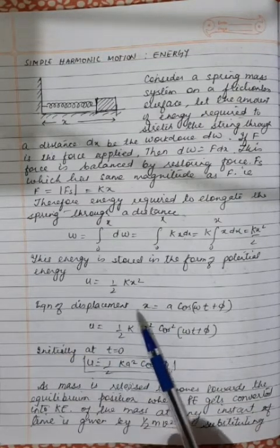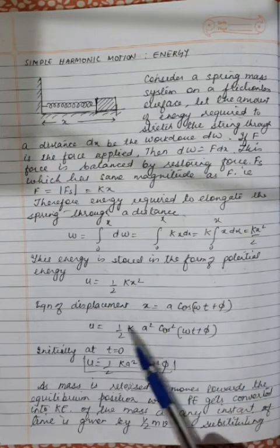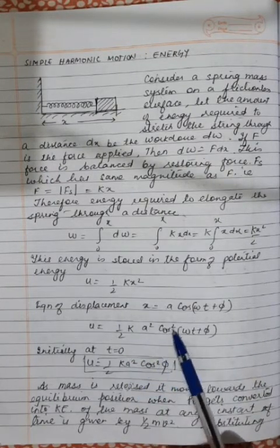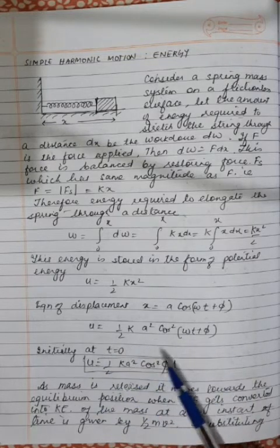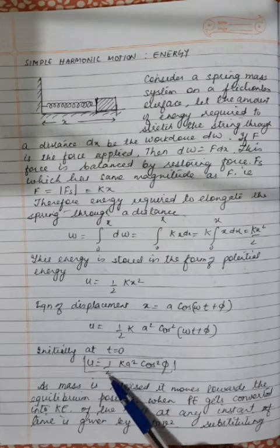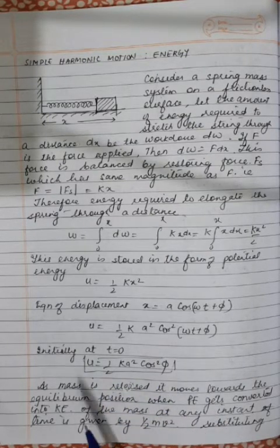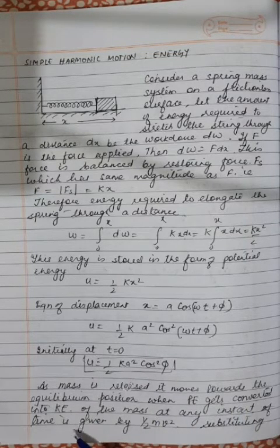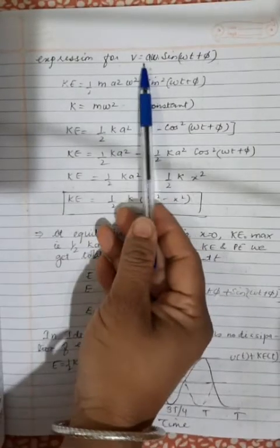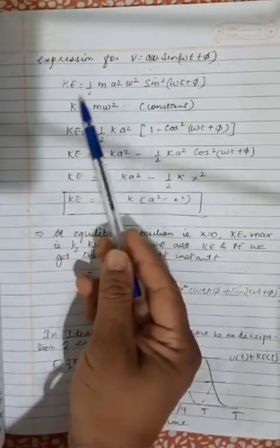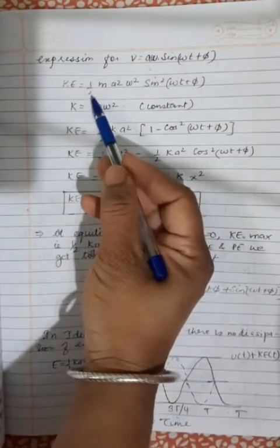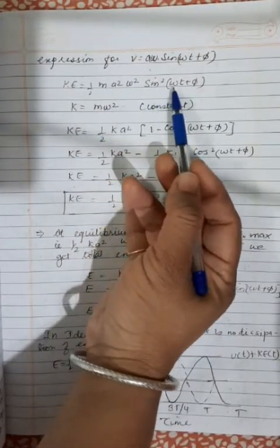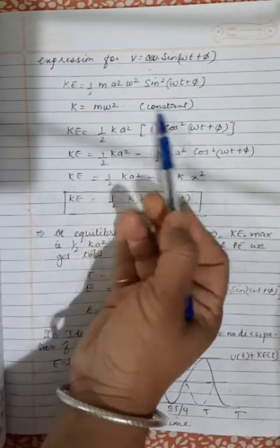Using the displacement equation x = A cos(ωt + φ), potential energy is U = (1/2)kA² cos²(ωt + φ). At t = 0, U = (1/2)kA² cos²φ. As the mass moves towards equilibrium, potential energy converts to kinetic energy. Kinetic energy at any instant is (1/2)mv². Substituting v = Aω sin(ωt + φ), KE = (1/2)mA²ω² sin²(ωt + φ). Since k = mω², KE = (1/2)kA² sin²(ωt + φ).